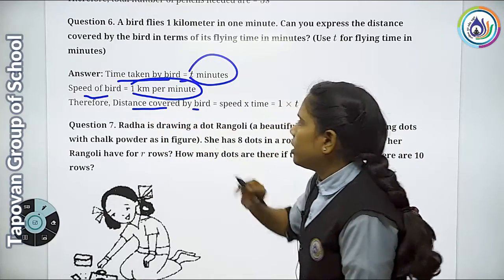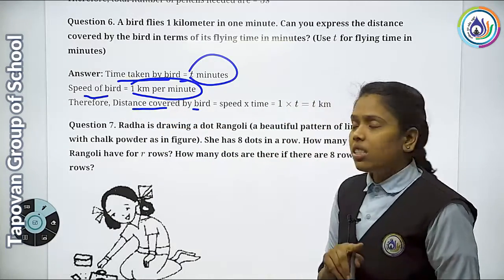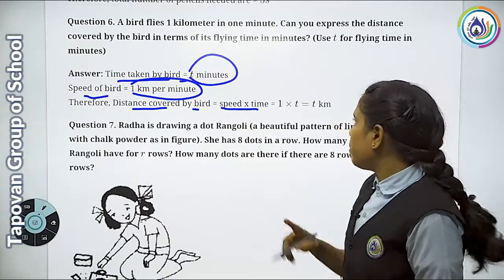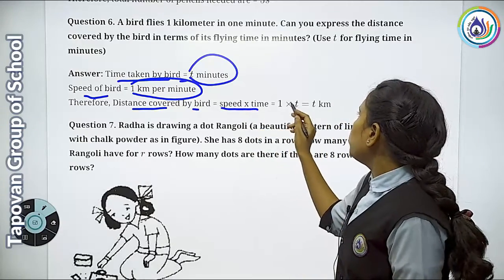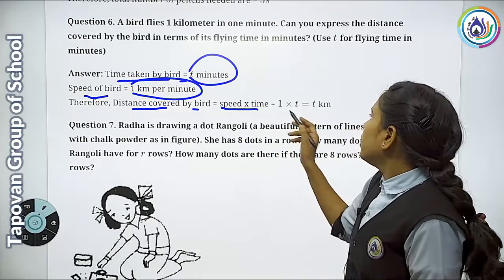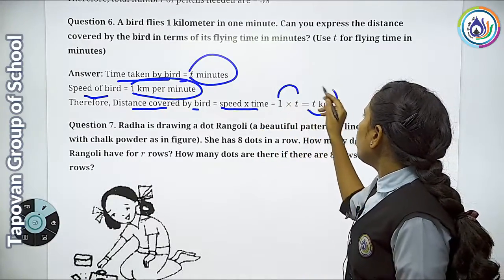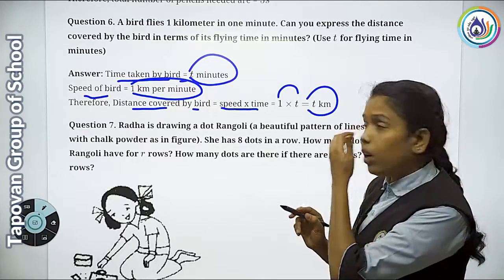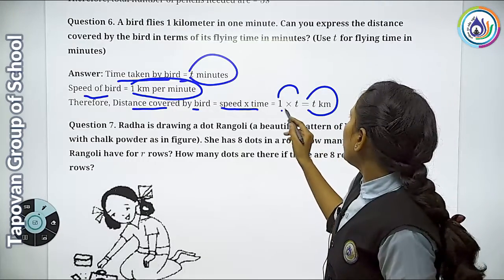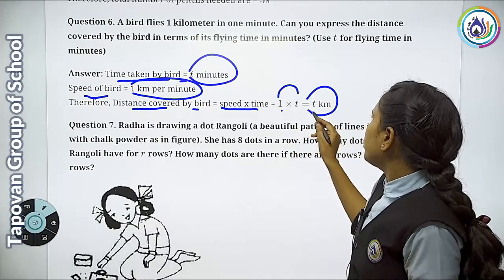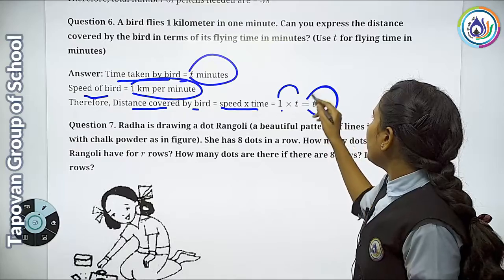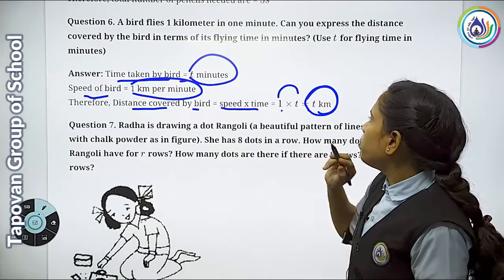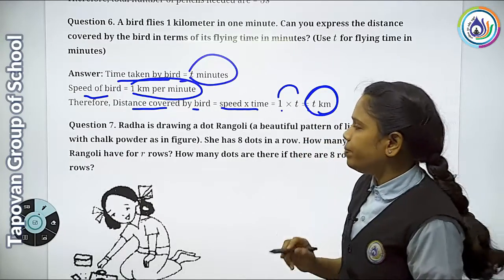The distance covered by the bird — how much would it have covered? So speed × time = 1 × T. So 1 into T is T kilometers. The speed is 1 and T is the timing, so the answer is T kilometers. This is the answer to Question No. 6.